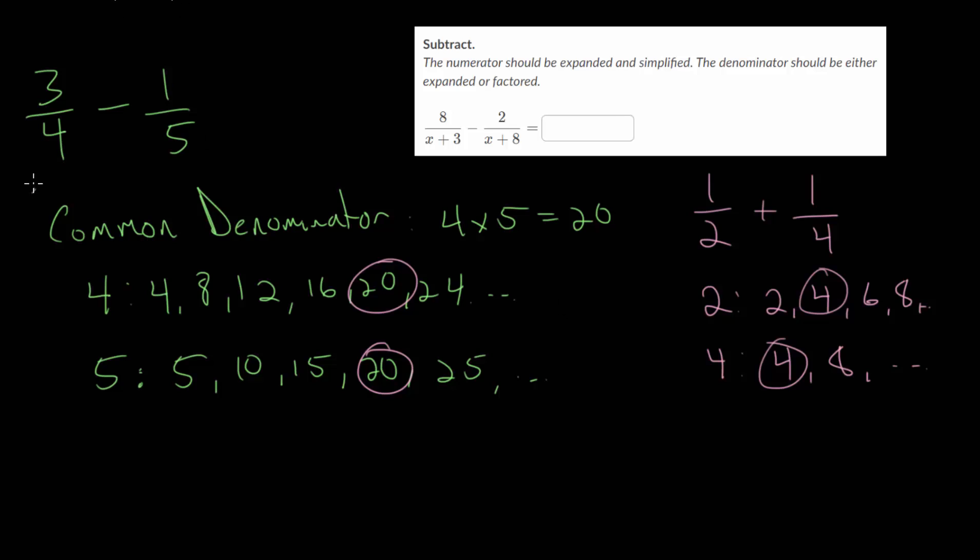So going back to this question, so that we can actually subtract these, we want to give each of these a denominator of 20. And so for this first fraction, you want to multiply the top and the bottom by 5, so that you can turn the denominator to 20. And for the second one, you're going to want to multiply the top and the bottom by 4 to get that denominator of 20.